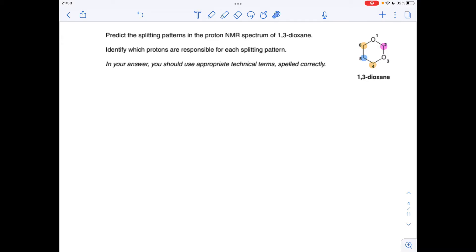So we'll start with the hydrogens at position 2. You'll see from the structure that there are no adjacent hydrogens to the hydrogens at position 2. So these would appear as a singlet.